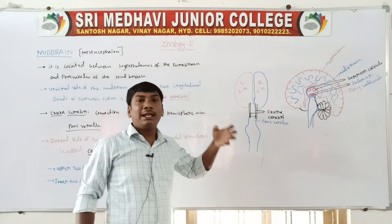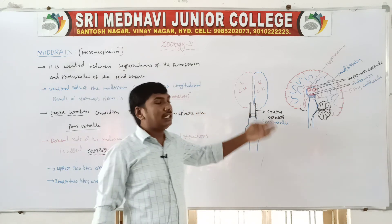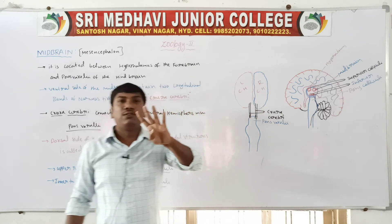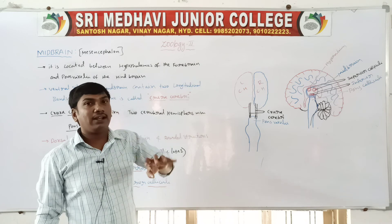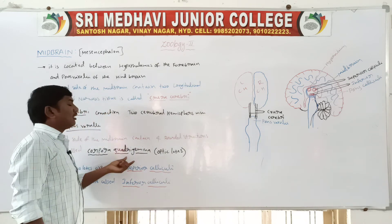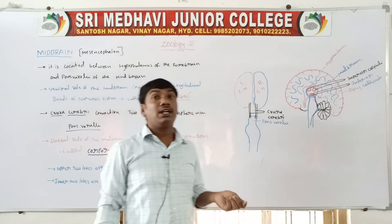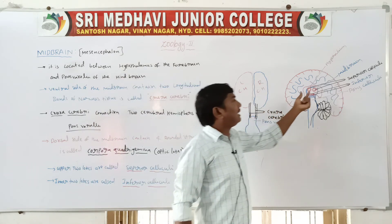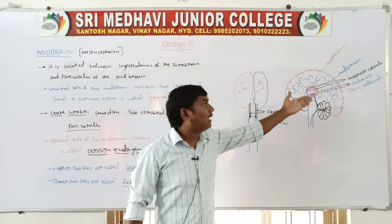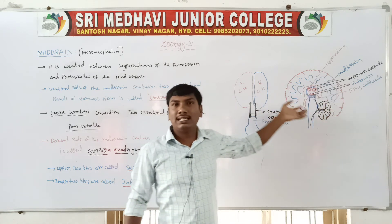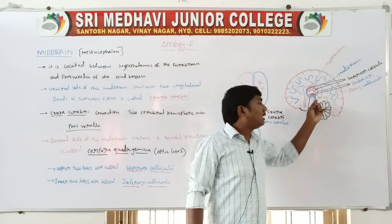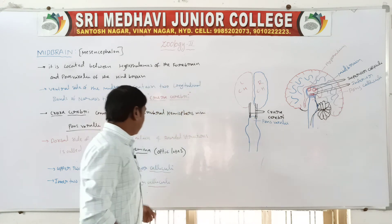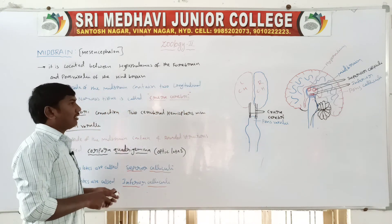The dorsal side of the midbrain contains four rounded structures called as corpora quadrigemina, also called as optic lobes. The upper two lobes are larger in size and are called as superior colliculi. The lower two lobes are small in size and are called as inferior colliculi.